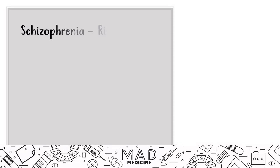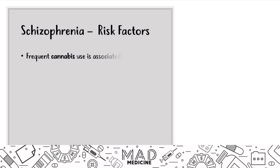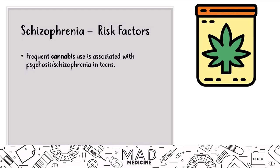One thing to understand about risk factors is that a lot of times we don't realize what causes diseases, but schizophrenia has been pretty well studied. There's a very hot button issue right now — cannabis. Frequent cannabis use is definitely associated with psychosis and schizophrenia in teens. This is something you may not hear about often, but frequent use of cannabis can be a significant risk factor.